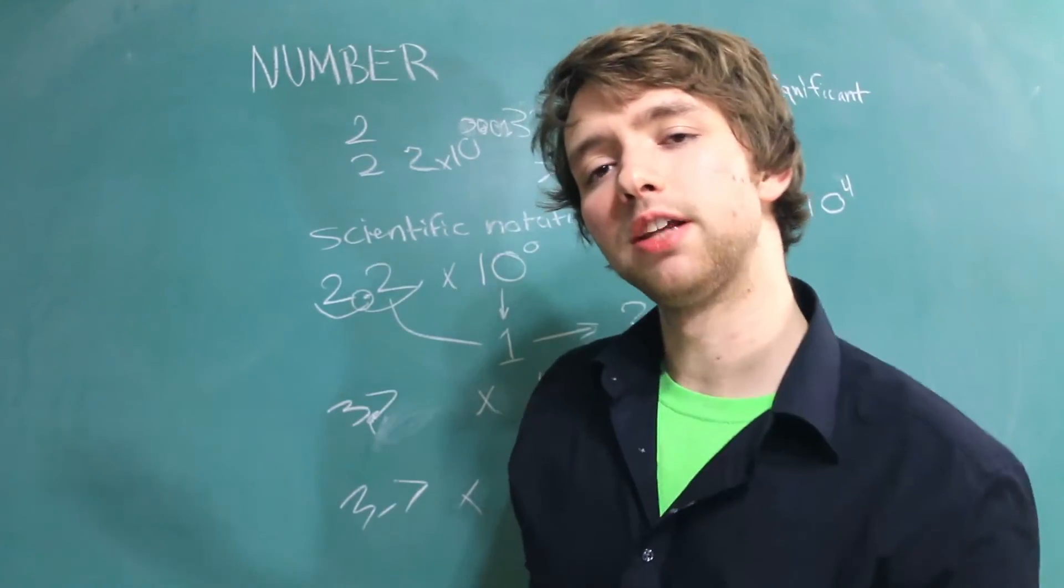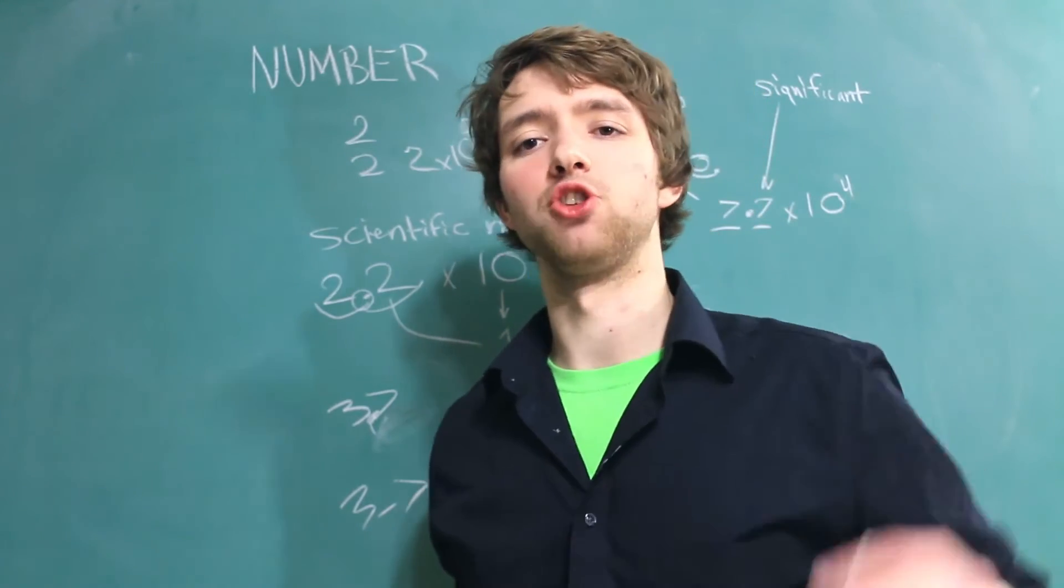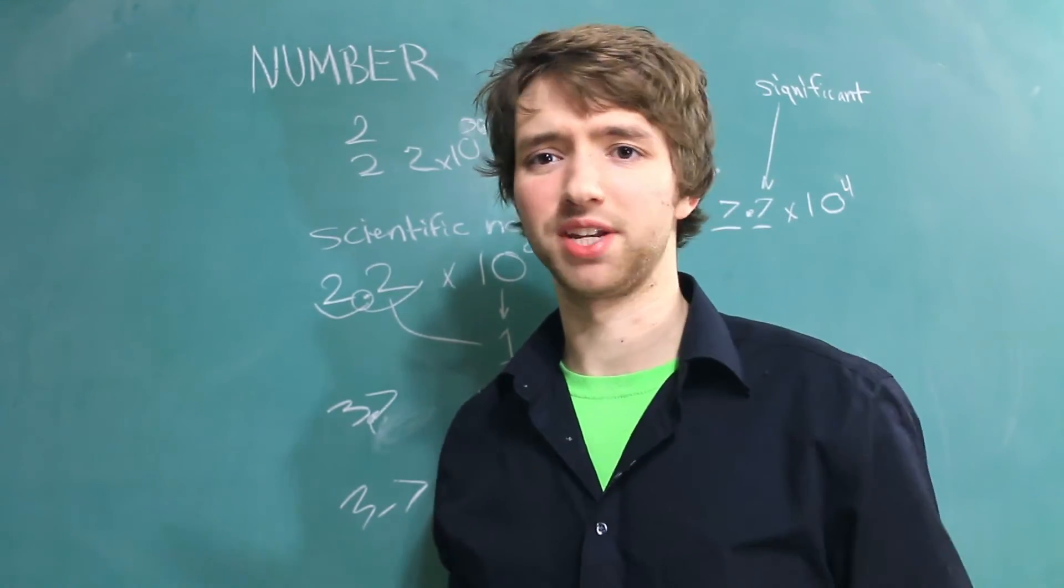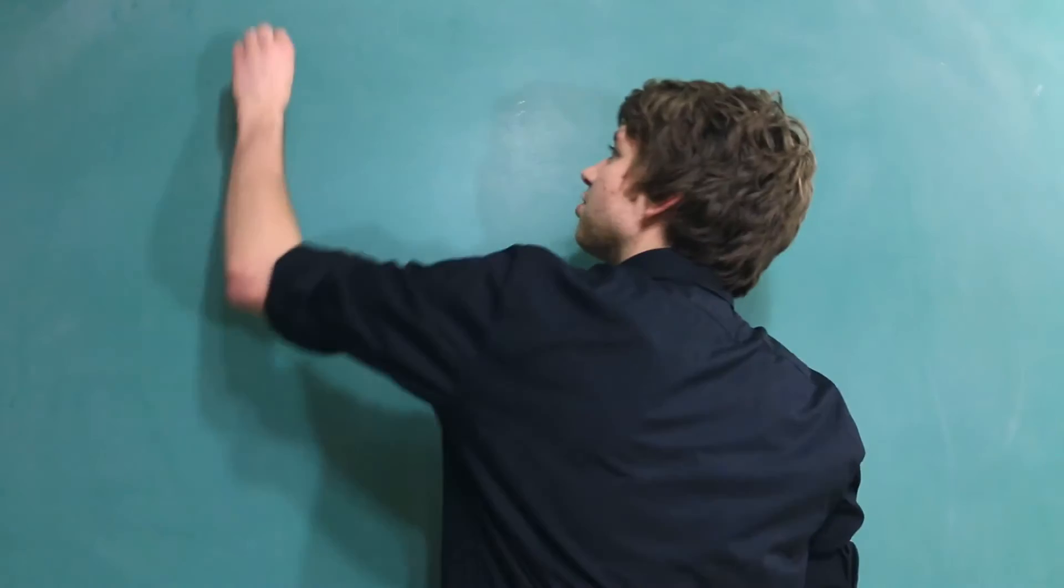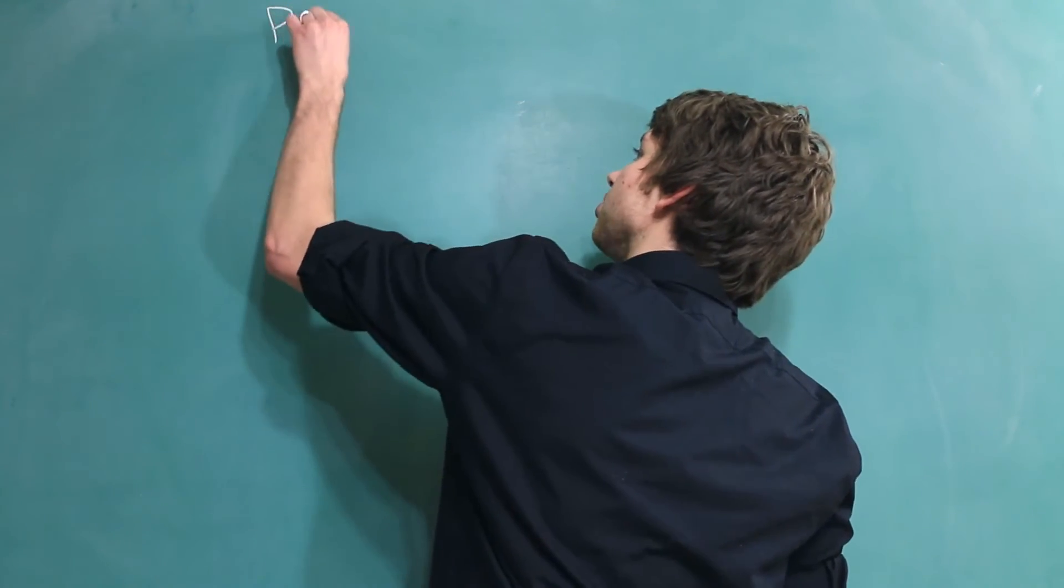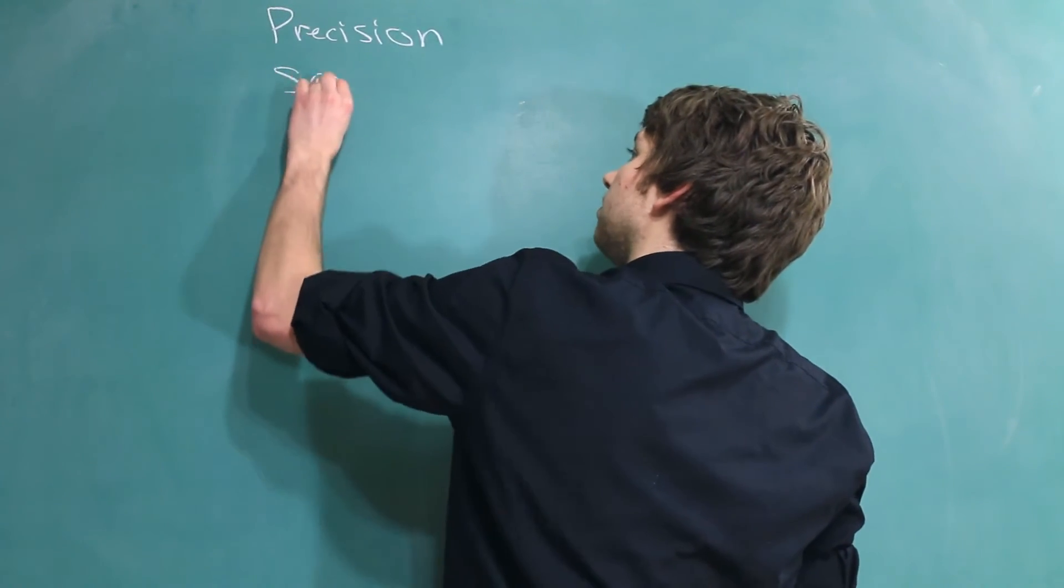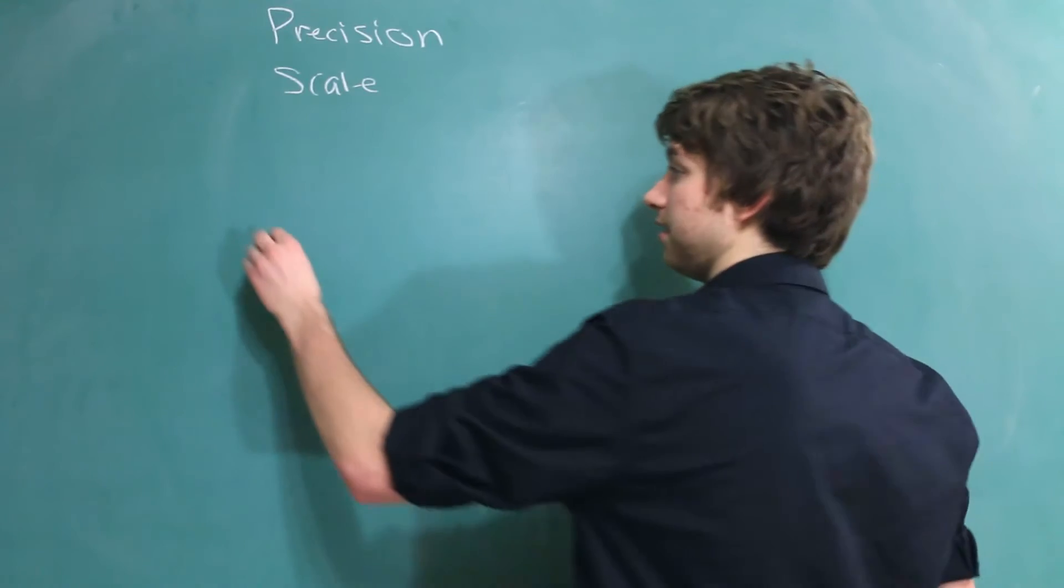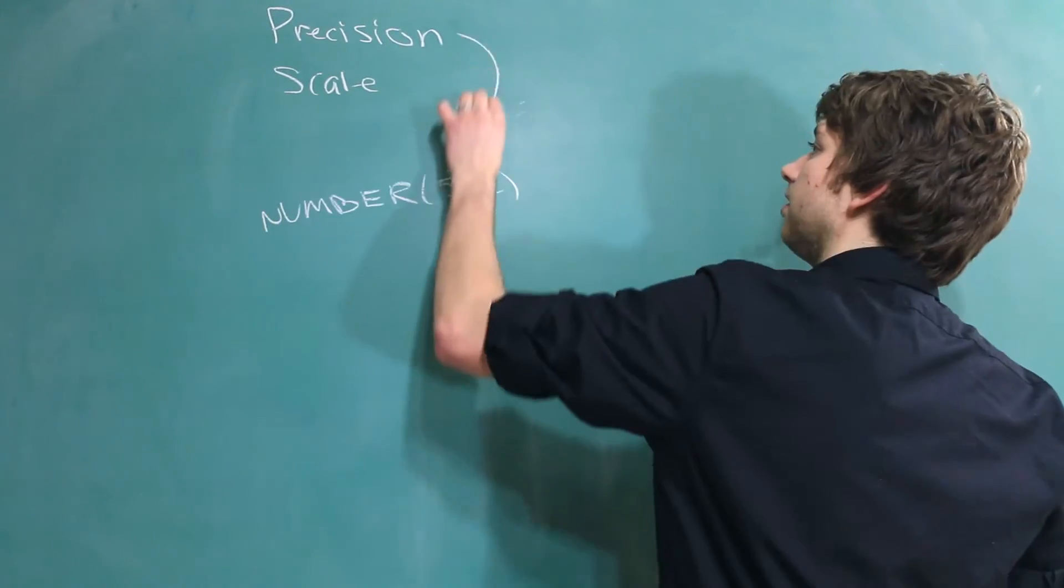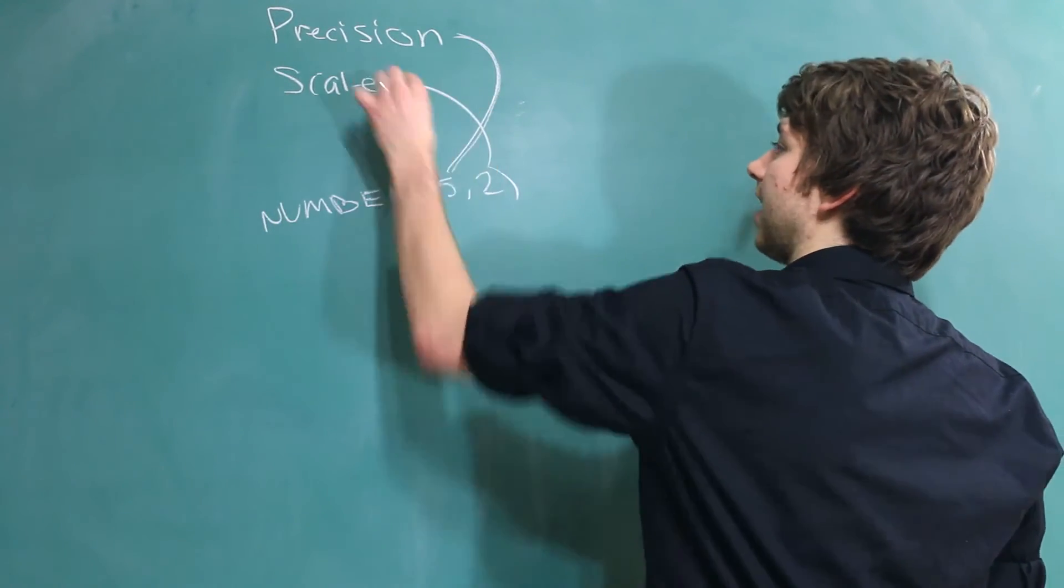Now when you declare this data type you have the option of specifying two extra options. So many options. It's like subway. Oh that was so cheesy. So we can specify the precision and the scale. And these are defined in parentheses when we give the data types. So something like this. This is the precision and that's the scale.